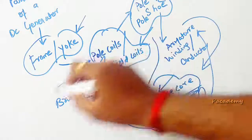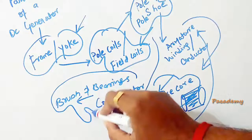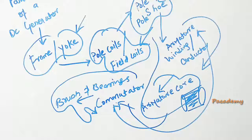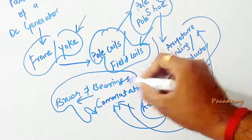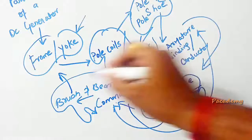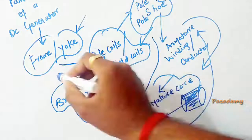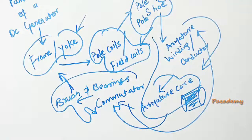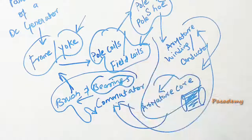And the brush is connected to the commutator in such a way that the output EMF can be connected or transferred to the external circuit. And bearings form an important part of the shaft.